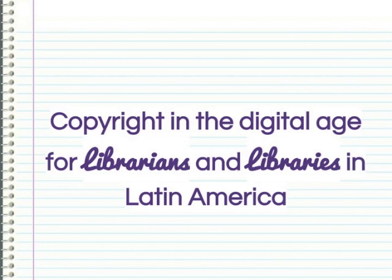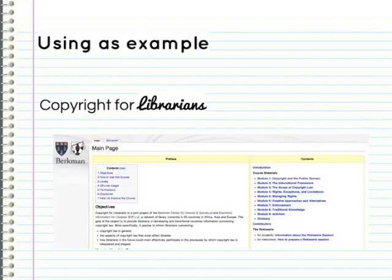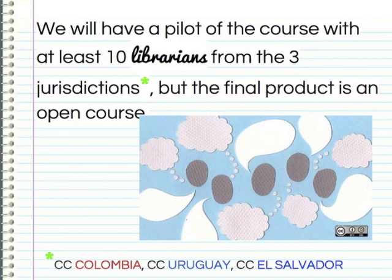The second program is in development by volunteers in the Latin American region. They are working on a course and workshop program that will help librarians understand the copyright ecosystem in Latin America and the way that open licenses can be used in their everyday activity. They are drawing on existing open resources such as the Berkman Center's Copyright for Librarians handbook. The face-to-face course will be run with librarians from Colombia, Uruguay, and El Salvador, and the final product will be an online course that can also be part of the School of Open.